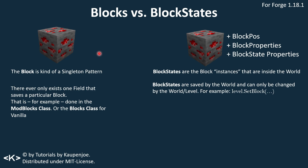You might say: there are multiple blocks in the world. If I set down a redstone ore block and then set one down two blocks next to it, then we have two different blocks. How does that work? Well, those are block states, and that is a very important distinction here.